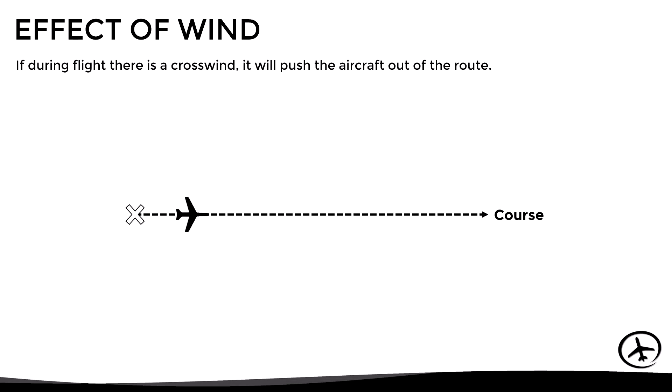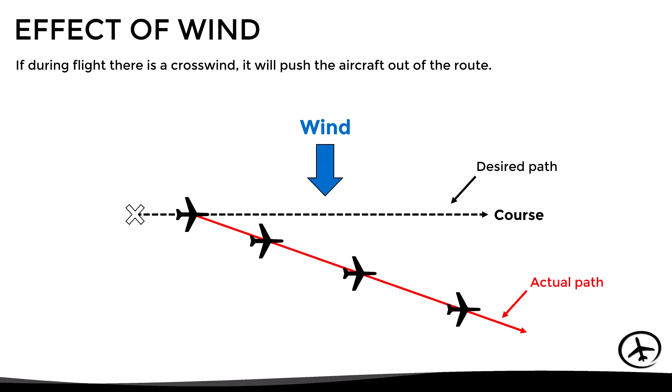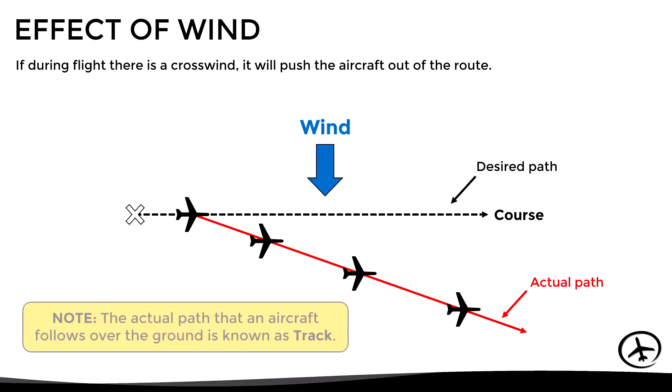Let's start by looking at the effect of wind. If during flight there is a crosswind, it will push the aircraft out of the route. In this example, a crosswind from the left pushes the aircraft off course. The actual path that an aircraft follows over the ground is known as track, and the angle between the desired course and the actual track is known as the drift angle.